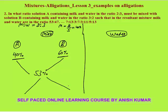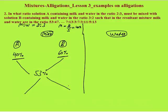Wherever the average concentration or average price is given, you can use the allegation method. In the final mixture, average concentration of milk is 53%. Subtracting diagonally: 60 minus 53 gives 7, and 53 minus 40 gives 13. So we should mix solution A and solution B in the ratio 7 is to 13.